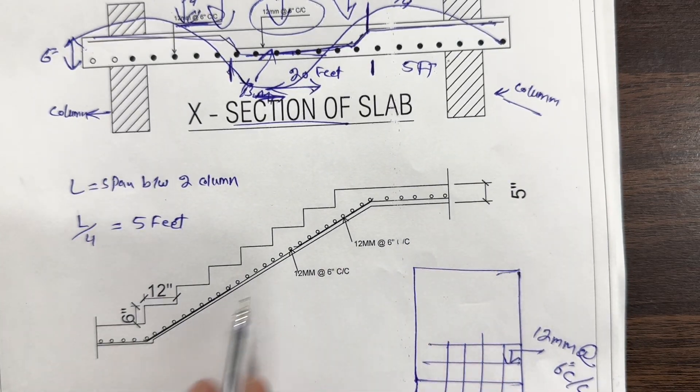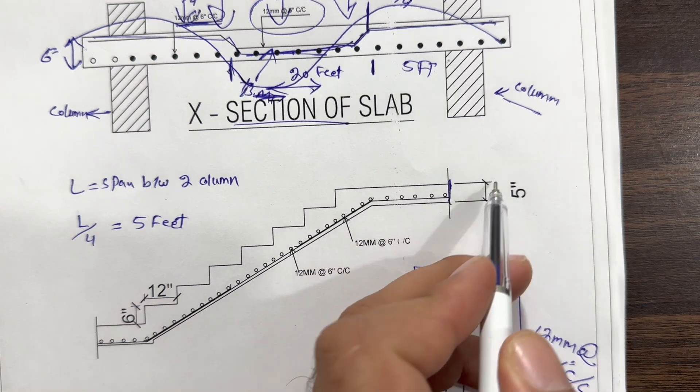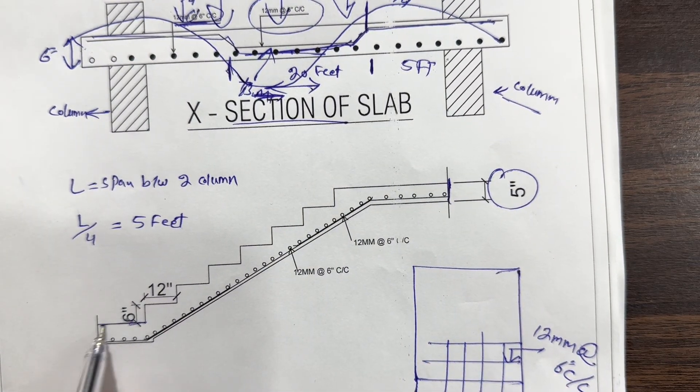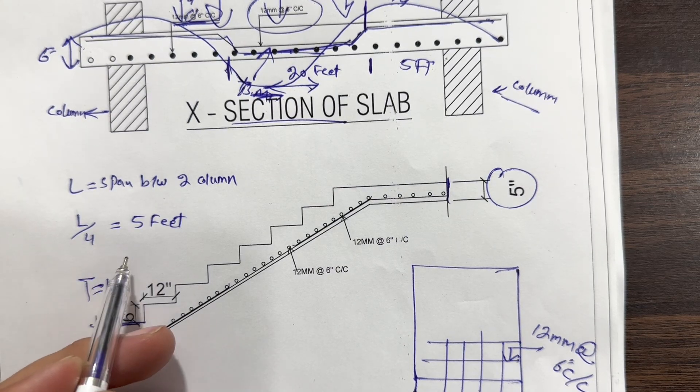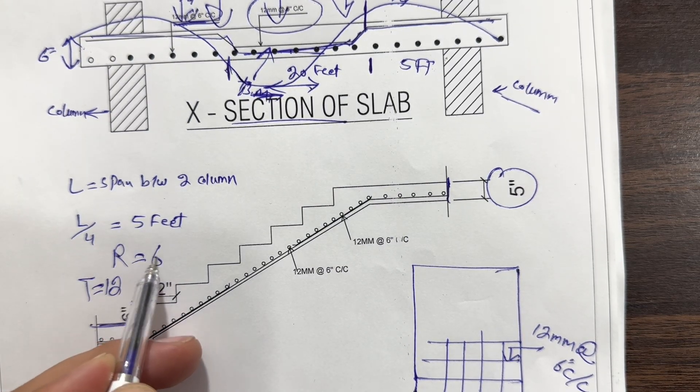Next, you can see this is a stair. This is the section of stair. Thickness is here 5 inches. If you see the tread is here 12 inches and the riser is 6 inches.